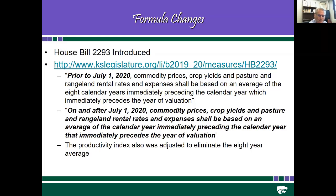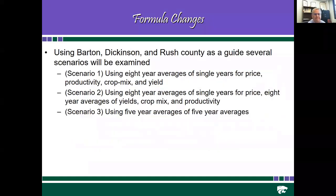The productivity index on soils was also adjusted to eliminate the eight-year average, so any change would be fully integrated in the year it was made. Using Barton, Dickinson, and Rush County as a guide, we're evaluating three scenarios. Scenario one eliminates the eight-year average of the eight-year average, essentially taking eight-year averages of single years for price, productivity, crop mix, and yield.